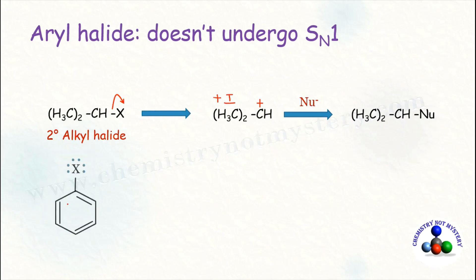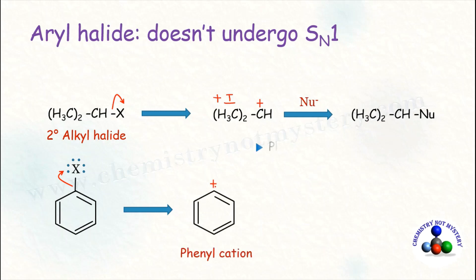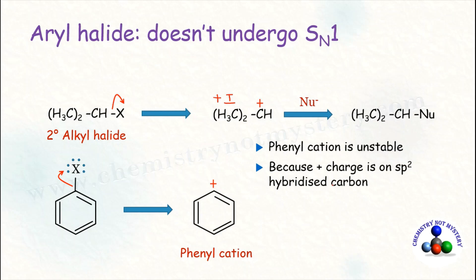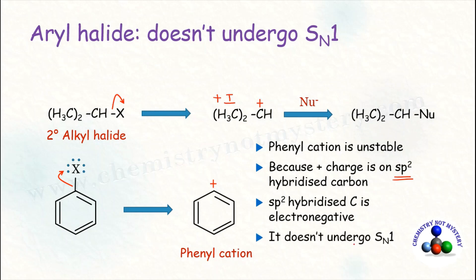But when the same thing happens with aryl halide — when the leaving group leaves the molecule, a phenyl cation is formed. This phenyl cation is unstable because the positive charge is on an sp2 hybridized carbon, and sp2 hybridized carbon is electronegative. That's why aryl halide doesn't undergo SN1 reaction either.